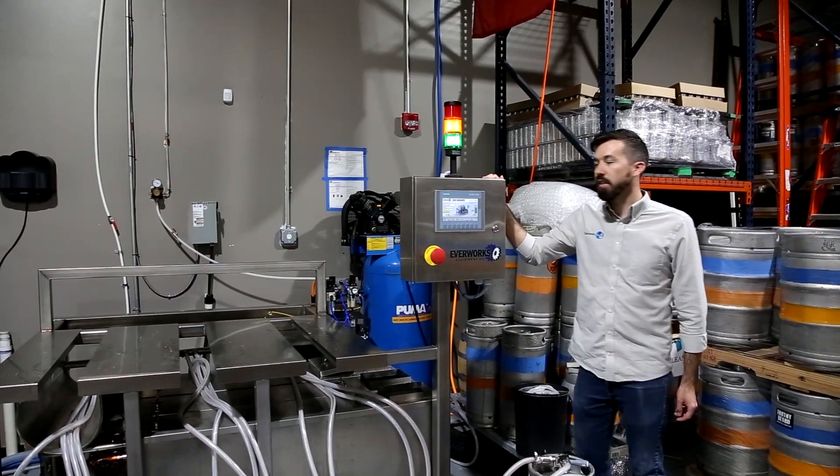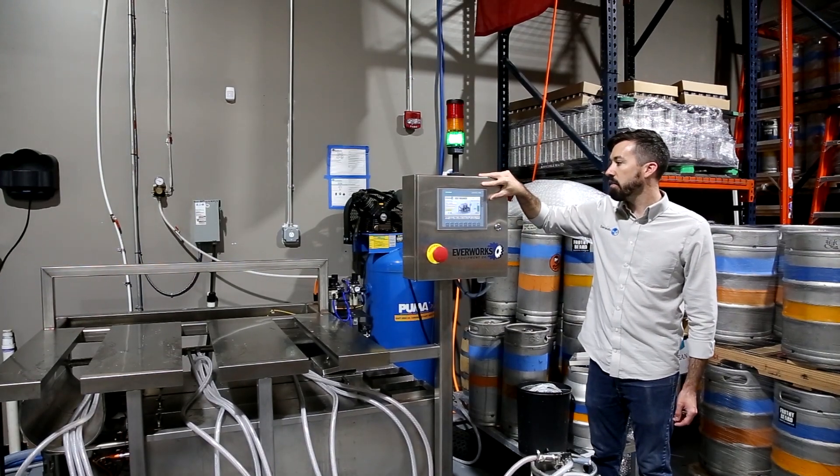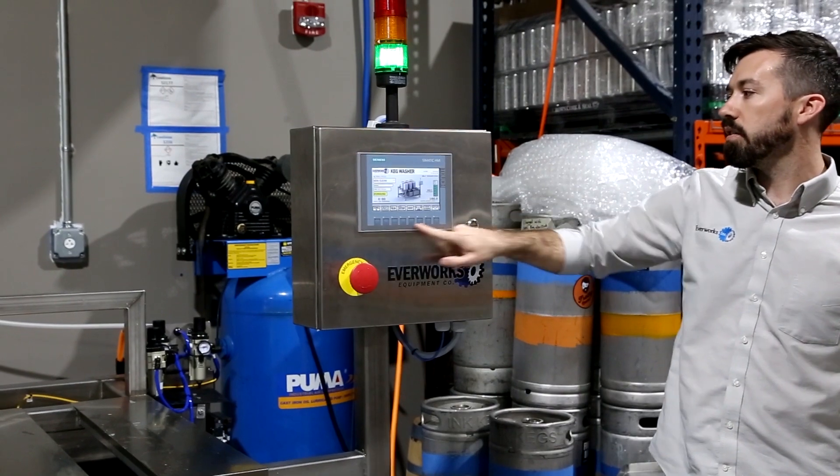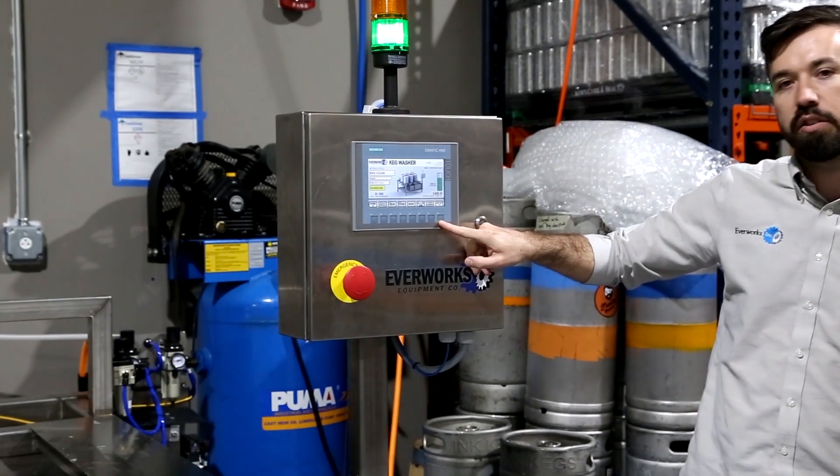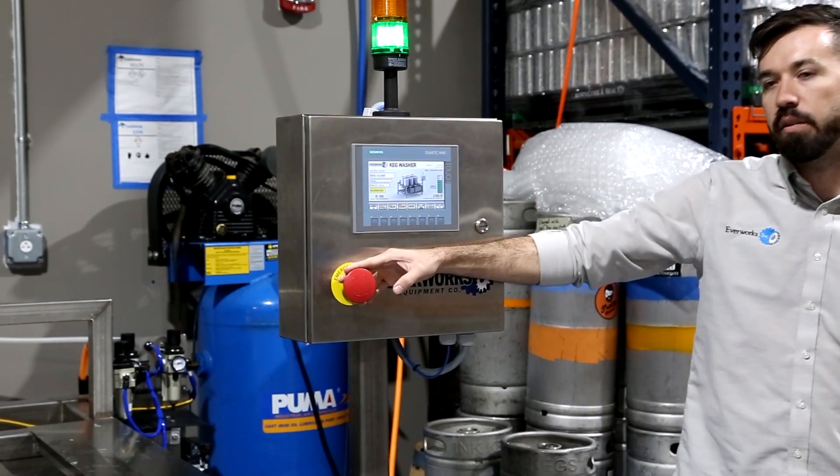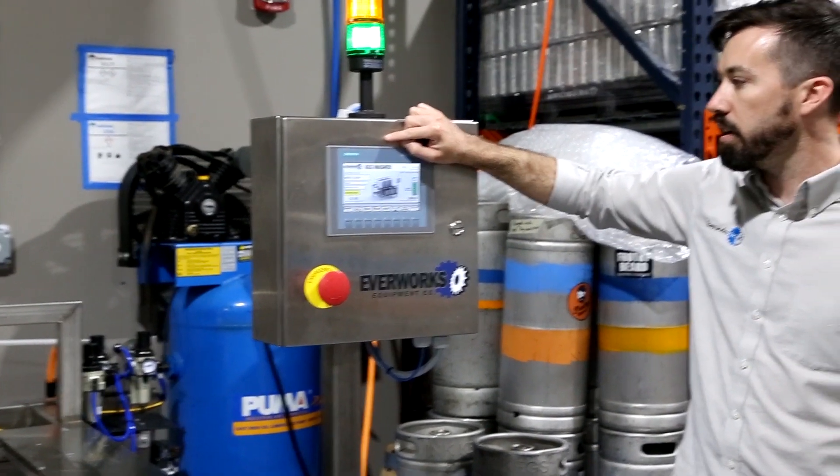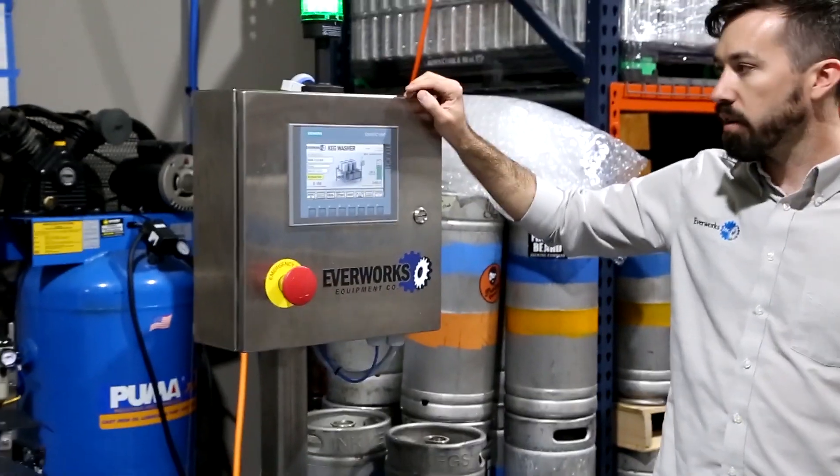This is the operator station. We've got a Siemens basic panel with touchscreen operation as well as hardened keys for gloves and dirty hands. The e-stop shuts down the process any time. The operator will basically scroll through the cleaning cycles, hit start, and everything works automatically.